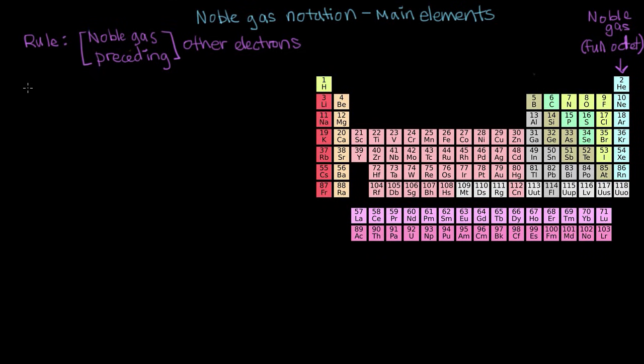So the first example we're going to talk about and write the configuration for is silicon. Silicon is right below carbon in the periodic table. And we can write its full electron configuration just for comparison. So if we start up here with hydrogen, silicon has the electron configuration 1s2, 2s2, 2p6.